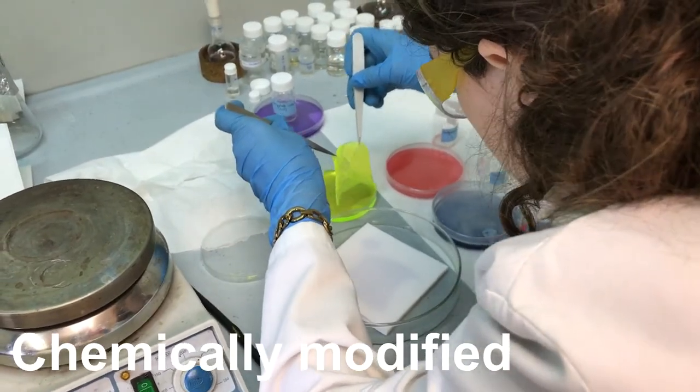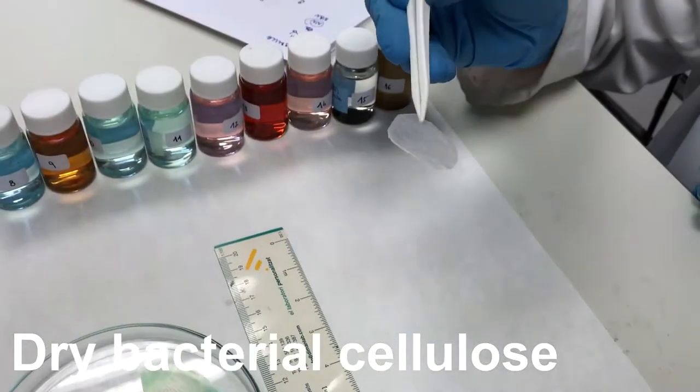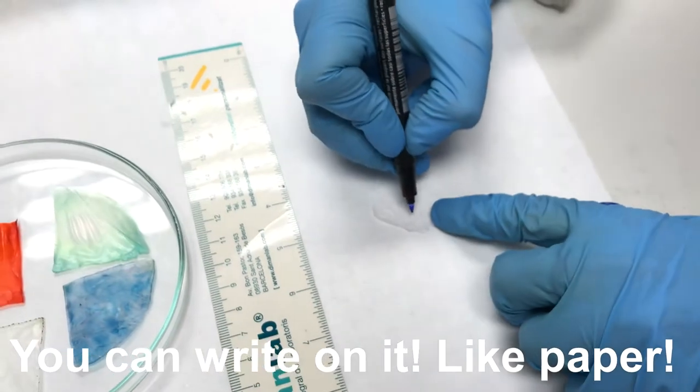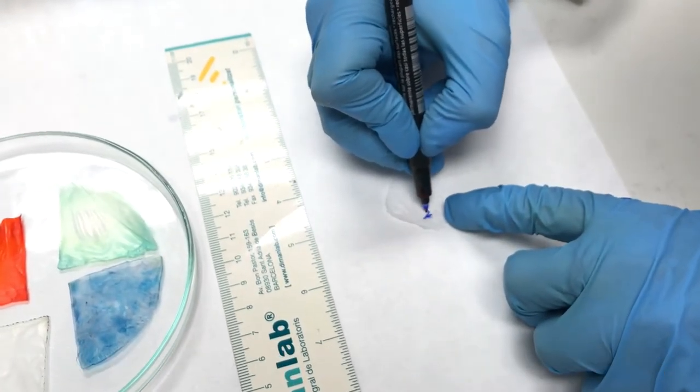Once dried, the cellulose is like paper, a thin membrane. And you can even write on it! That's what we do in our lab. Pure bacterial cellulose.